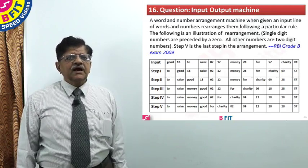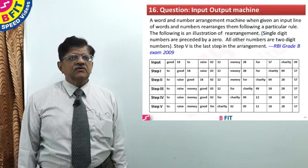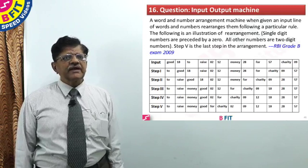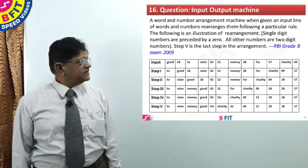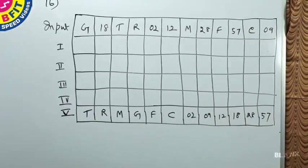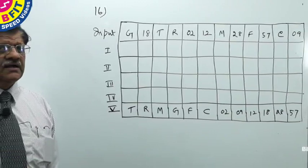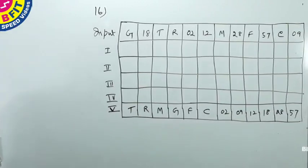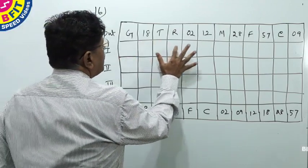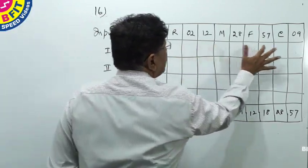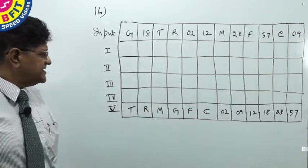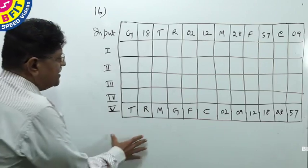Now let us see how the machine is following which rule and how it is working. I have already drawn the table so that we can save some time. The input is given here. There are 12 words and numbers given, and they are finally arranged in Step 5 in some order.